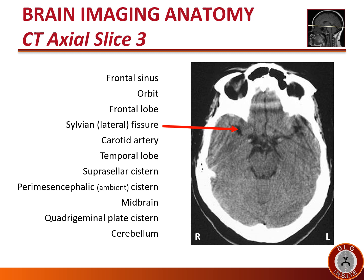The sylvian or lateral fissure, as it is sometimes called, is the largest fissure in the brain. At the level of this slice, it separates the frontal lobe anteriorly and the temporal lobe posteriorly. The middle cerebral artery runs in the sylvian fissure. Here you see the relatively hyperdense carotid artery in the circle of Willis. The temporal lobe lies posterior to the sylvian fissure. Note also the very medial temporal lobe forms a little knuckle protrusion sometimes called the uncus.